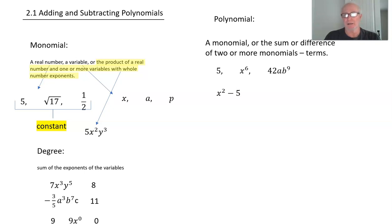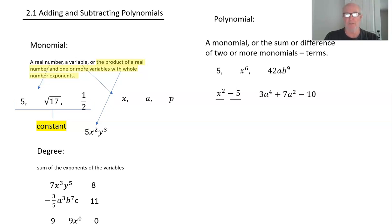x² minus 5 — here are two terms related as a difference. This has two terms: x² is one term and negative 5 is the other. The term has to keep the sign that goes with it. Here's a polynomial with three terms: the first term is 3a⁴, the second term is 7a², and the third term is negative 10.